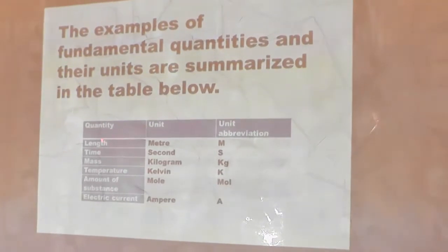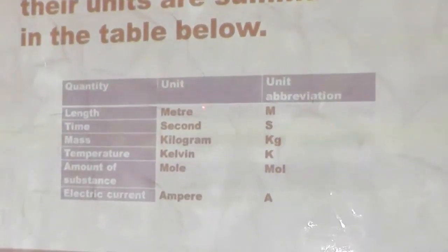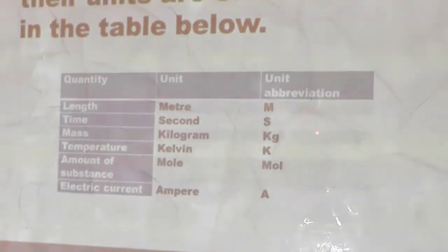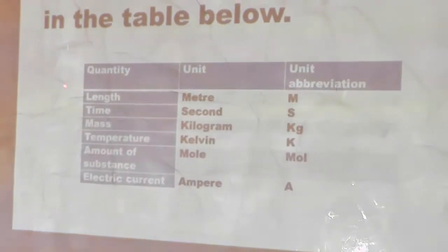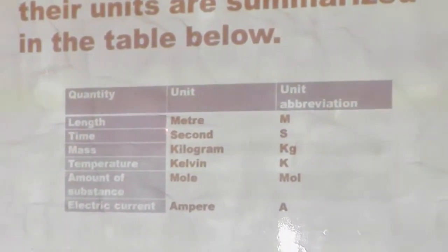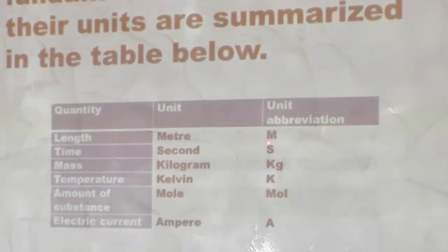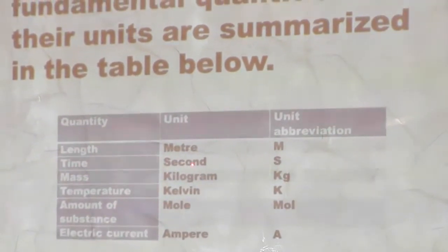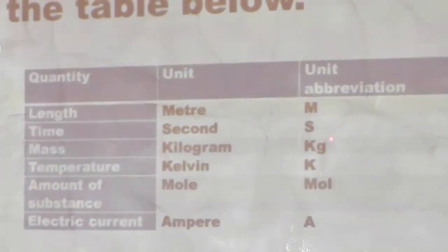Take a look at the table — this column shows the quantity, the next column shows the unit, and the other shows the unit abbreviation. Number one: we have length. The unit of length is meter, and the abbreviation of this unit is written as M. Then we have time, measured in seconds, with abbreviation S.